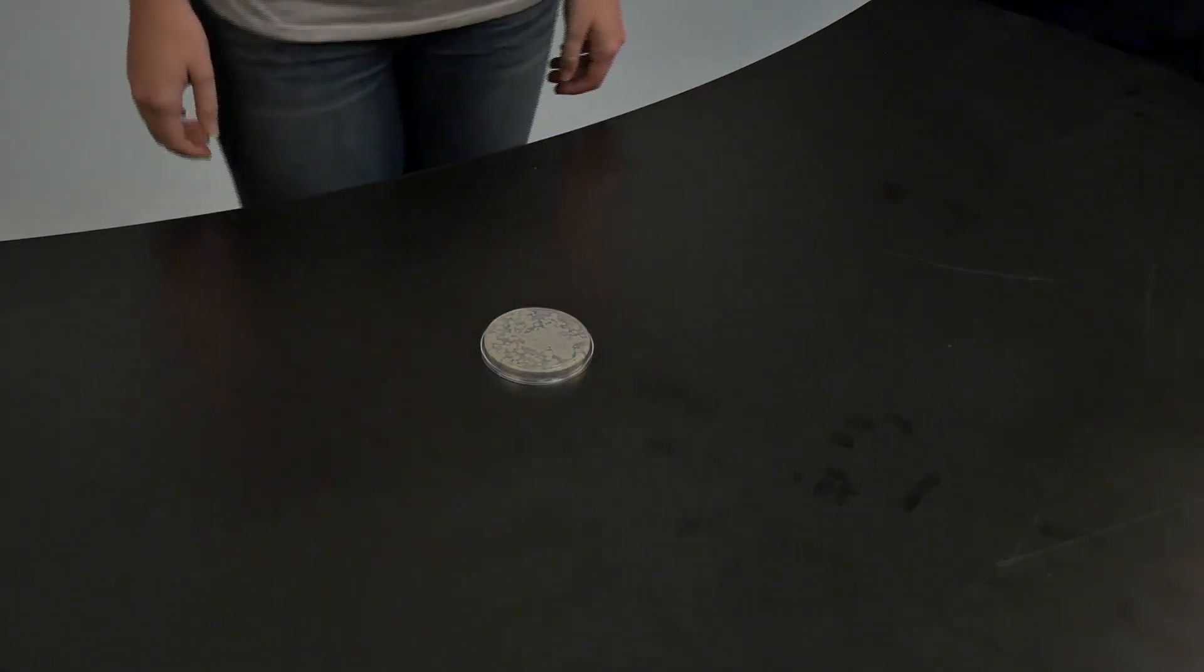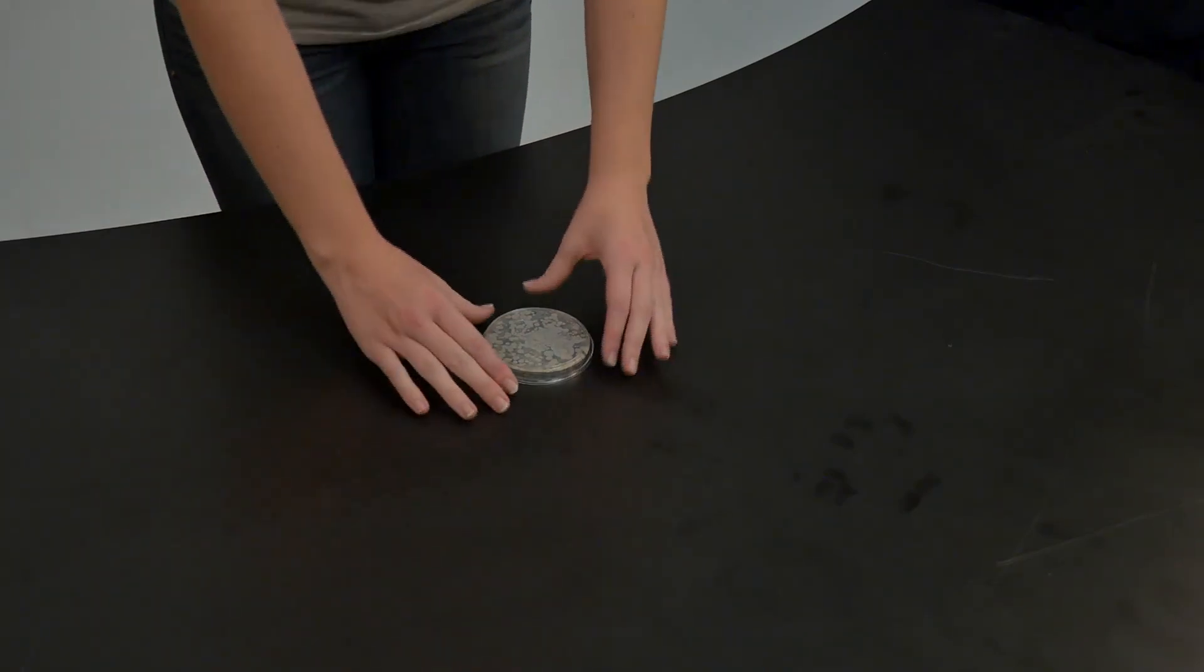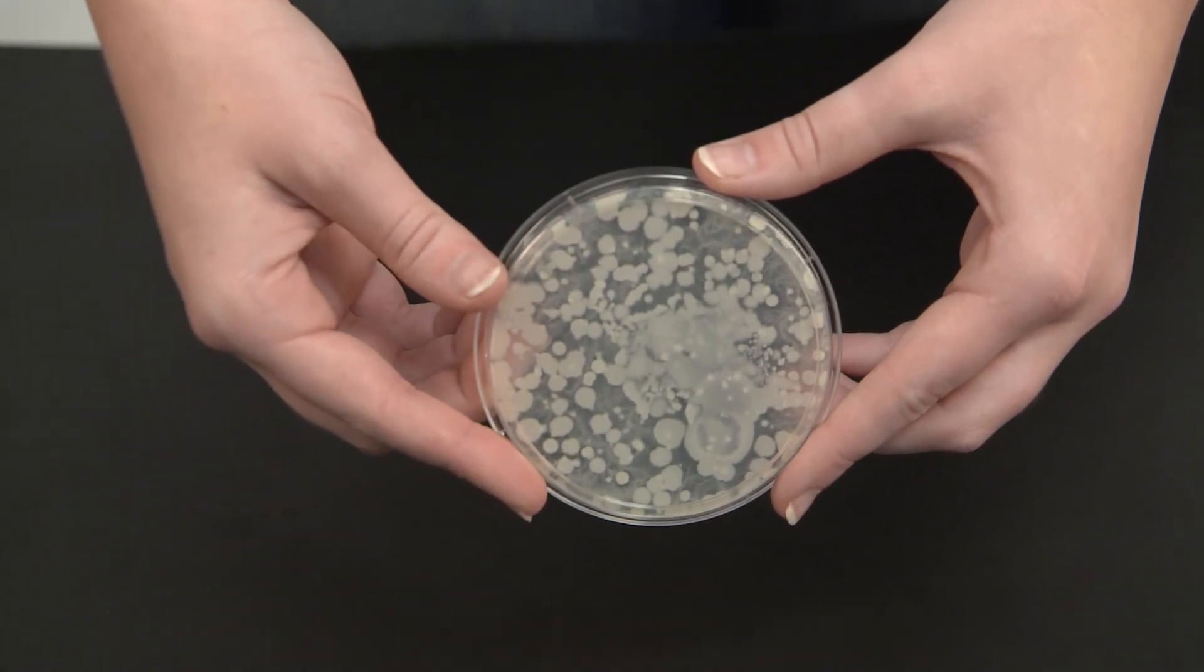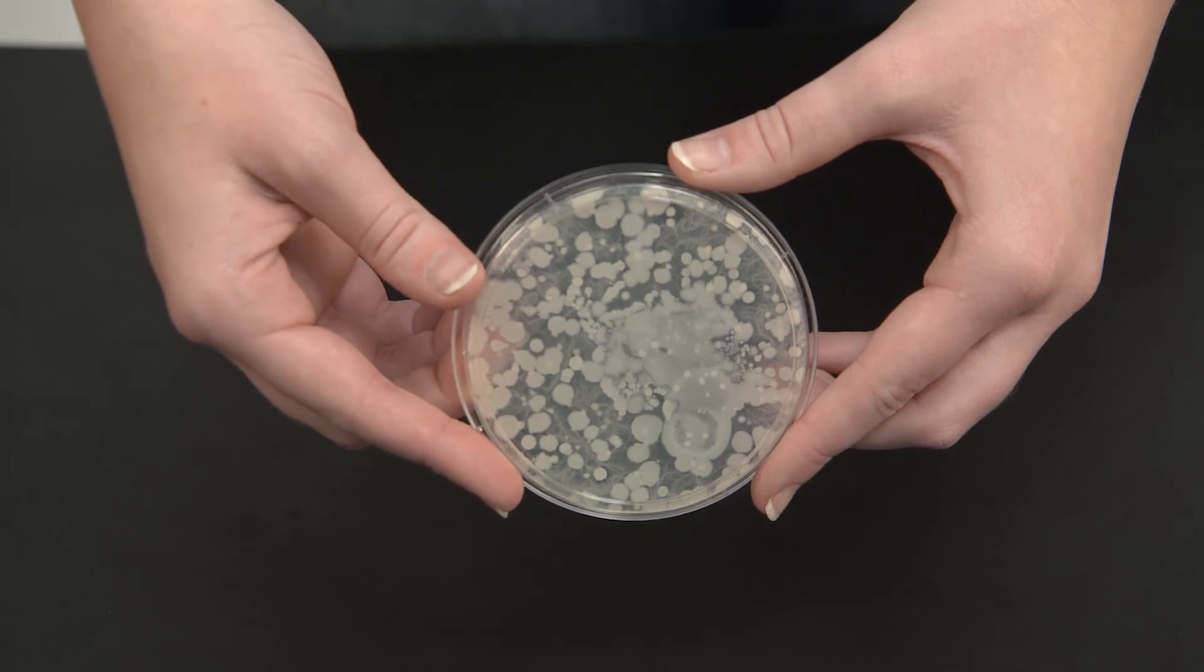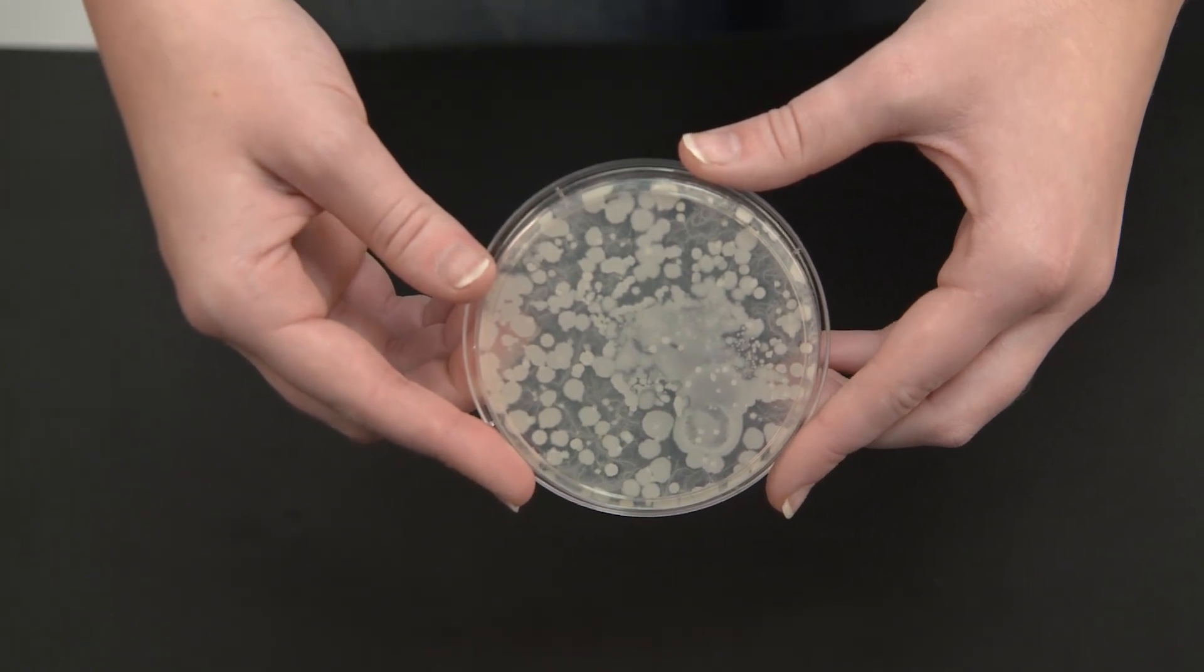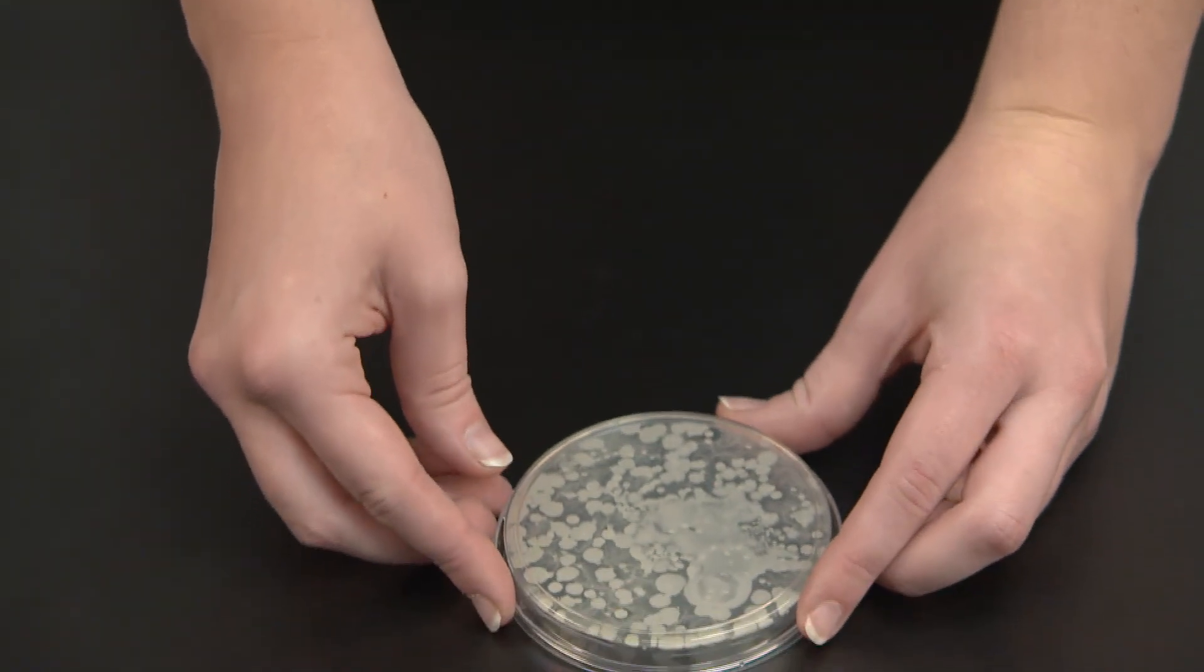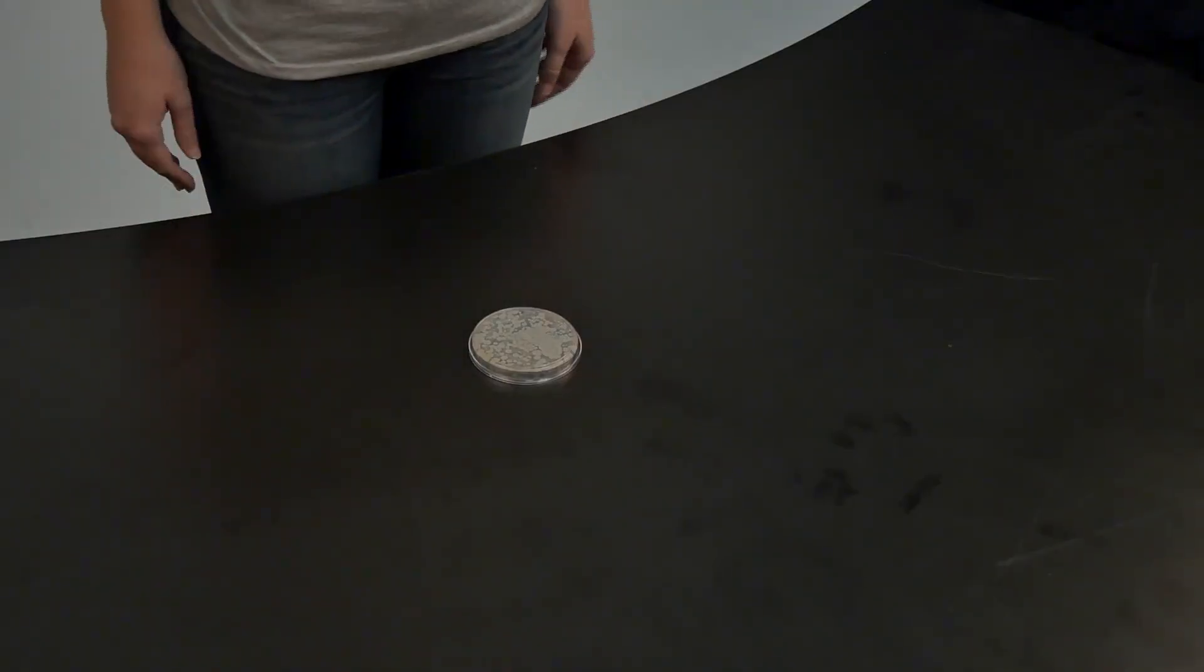There are many ways to measure the growth of bacteria. One of these is just to count the bacterial cells. Because there are so many bacteria in one gram of dirt, if we just spread the dirt on a plate, the bacteria will grow so close to each other that we won't be able to see individual colonies.